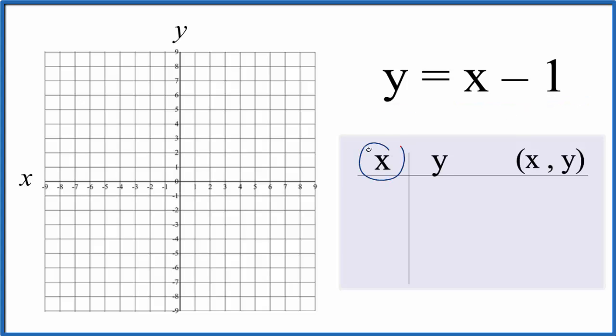First we'll put values in for x, find the corresponding value for y, and then we'll just graph that to get the graph for y equals x minus 1. Then we can check our work with the slope-intercept formula, y equals mx plus b.